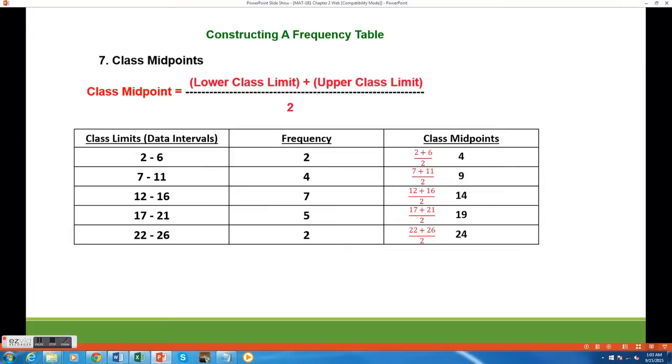The formula in red can be used to calculate these midpoints. I want to find the average of the limits for each class. For the first class, I'm going to take the lower limit 2 and add the upper limit 6. When I divide that by 2, I get 4.